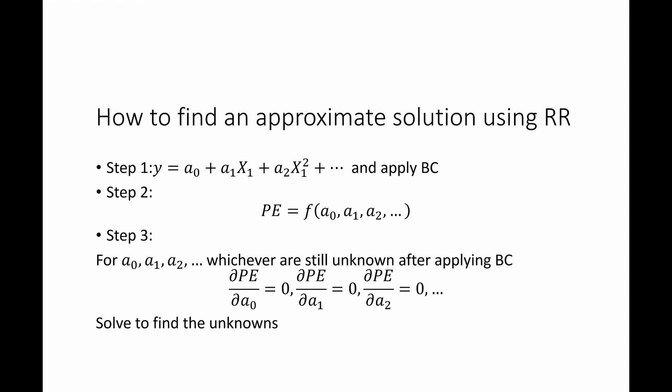The third step is to find the remaining unknown coefficients in the polynomial function which satisfy the minimization of the potential energy: partial potential energy by partial A0 equals 0, by partial A1 equals 0, by partial A2 equals 0, and so on.